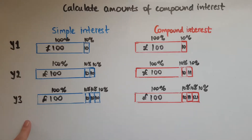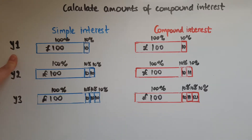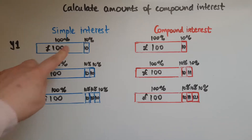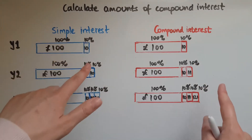I've shown simple interest in blue and compound interest in red. We get interest when we invest amounts of money. We're going to assume that we invest one hundred pounds in both cases, for both simple and compound interest, at ten percent interest rate.